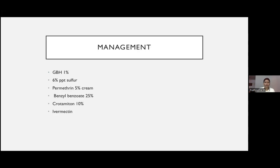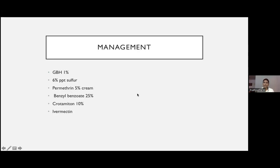Permethrin cream is very effective but the mode of application must be explained. It is a 12-hour application — apply at 8 pm, wash off at 8 am next day. Ask the patient to reapply after 10 days. The reason: larvae mature by day 10–14, so reapplication ensures newly matured mites are also treated.